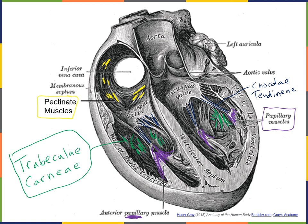The atrioventricular valves function to prevent blood from flowing backwards from the ventricles into the atria. There are two AV valves. The right AV valve is the tricuspid valve, which prevents blood from flowing backward from the right ventricle into the right atrium. The left AV valve is the bicuspid valve, also commonly referred to as the mitral valve.